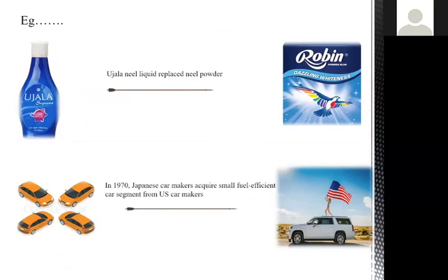An example is Robin versus Ujala. Robin was a powder-based product, but Ujala replaced it by offering a liquid form — you don't need to mix it with water. Their famous ad 'Aya Ujala, Char Bunde Wala' highlighted this advantage, directly targeting Robin's weakest point. Similarly, in the 1970s, Japanese car makers acquired the small, fuel-efficient car segment from U.S. car makers, who made comparatively costly vehicles, by focusing on fuel efficiency and lower cost.